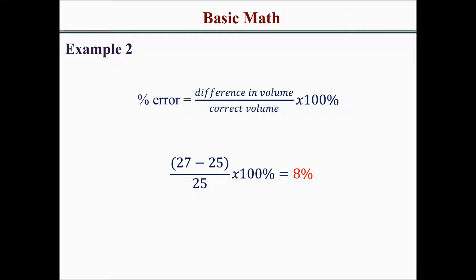Divide the difference by the original wanted volume of 25 and multiply by 100%. The calculation is (27-25)/25 × 100% = 8%.